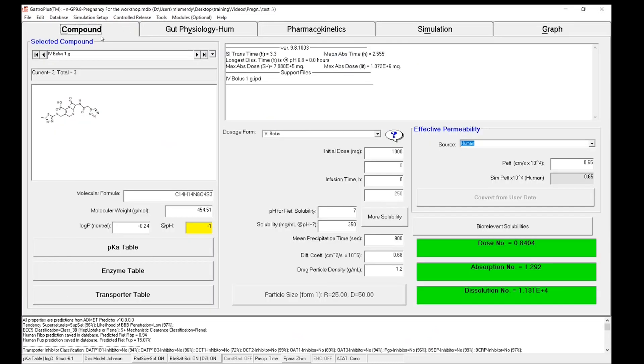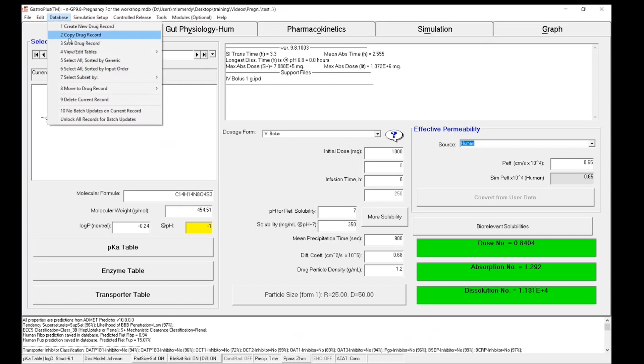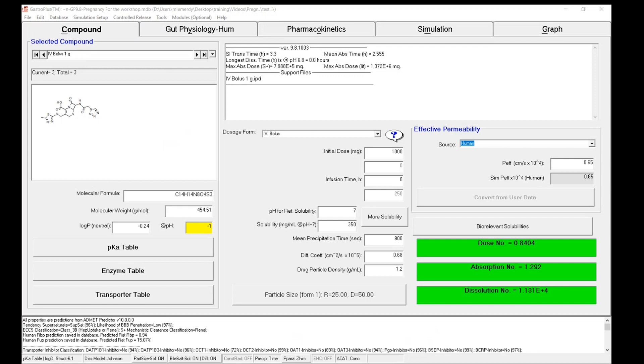To do so, I will copy this drug record and give it a specific name. I have already pre-created the support file that contains the information for the plasma and the fetal venous return consumption time course. Next, I need to adjust the dose slightly from an IV bolus to an IV infusion with a time of 0.05 hours for the infusions.